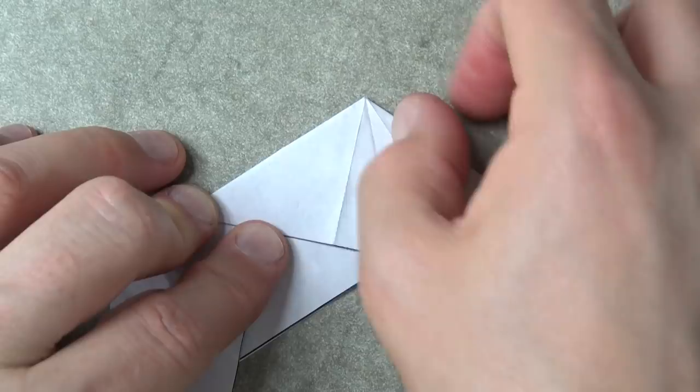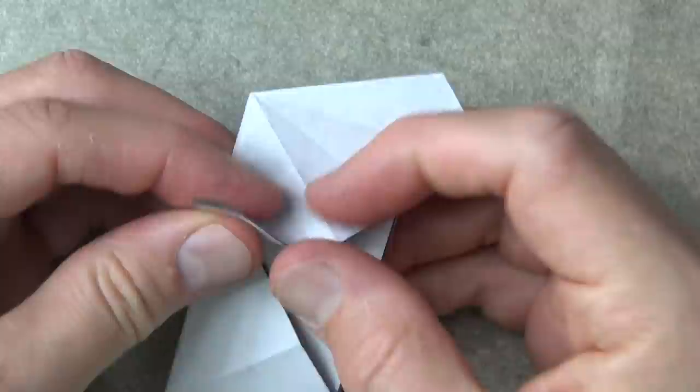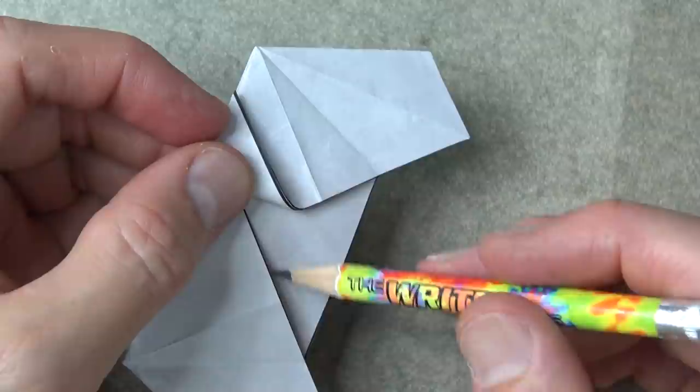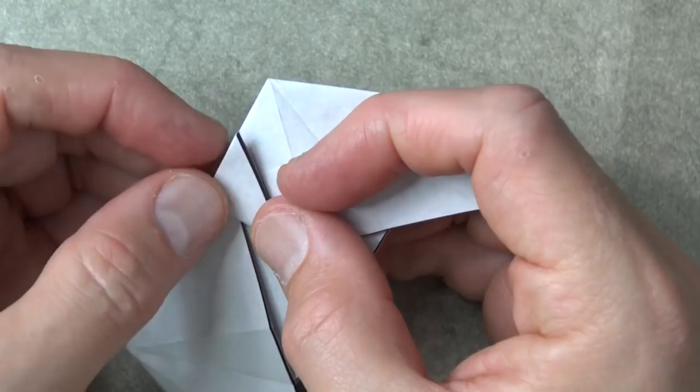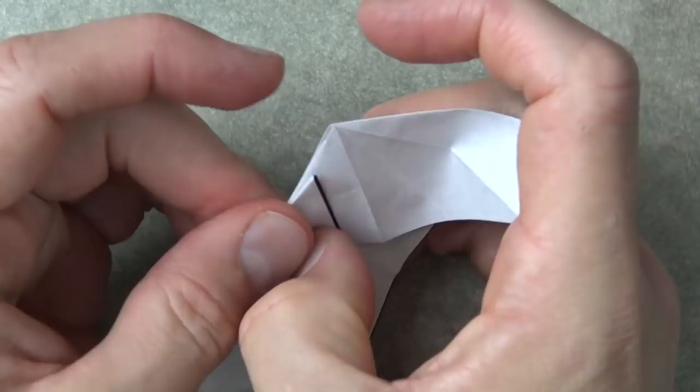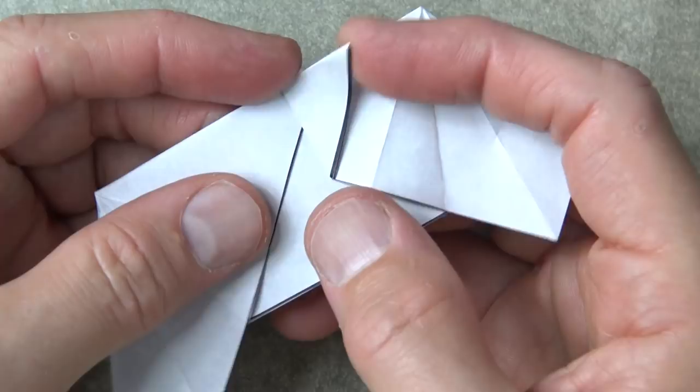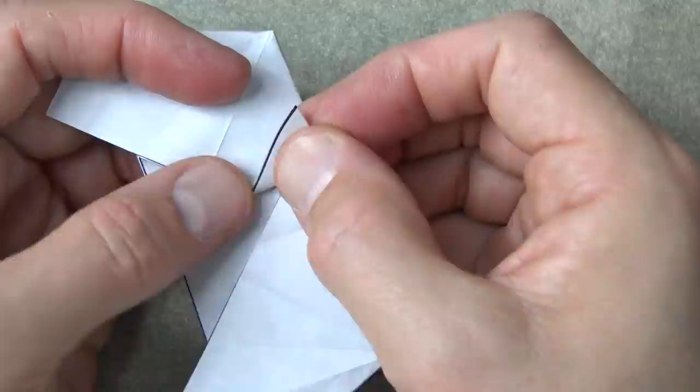Okay, now we're going to fold this flap so that this edge is right in the middle of this edge and this crease. Just eyeball it. So it's like that. And unfold and bring this flap on top and repeat right in the middle.